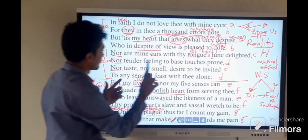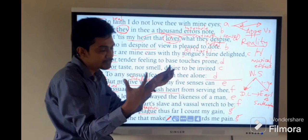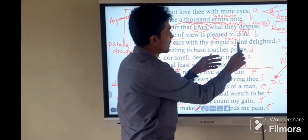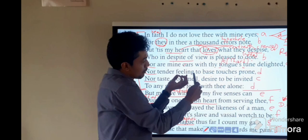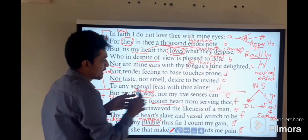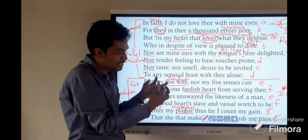Here are the parallel structures. Nor are mine ears with thy tongue's tune delighted. Tongue's tune is alliteration, giving hard effect and musical sound for the poem. Nor tender feeling to base touches prone, nor taste, nor smell desire to be invited. From the senses, he notes the errors, so the poet persona is not interested from the senses to be invited to the dark lady.